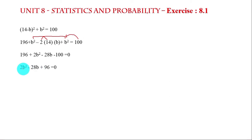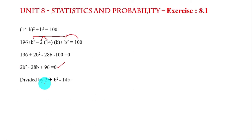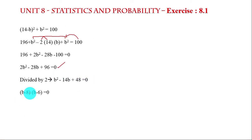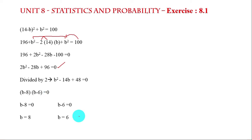Simplifying: 2b squared minus 28b plus 96 equals 0. Dividing throughout by 2: b squared minus 14b plus 48 equals 0. Factorizing: (b minus 8)(b minus 6) equals 0. Therefore b equals 8 or b equals 6.